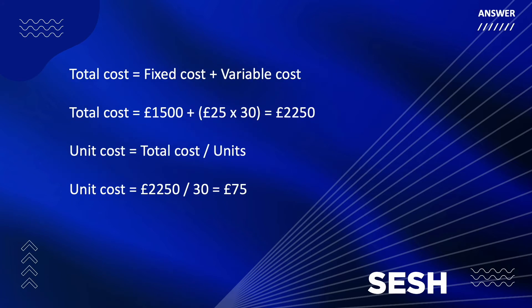So this is how you calculate. Firstly, you need to calculate your total cost. Your total cost is your fixed cost plus your variable cost — that's £1,500, plus £25 multiplied by 30. Adding those fixed and variable costs together comes to £2,250.